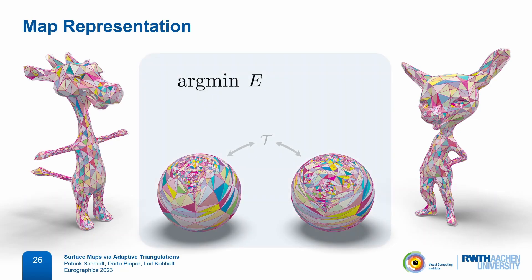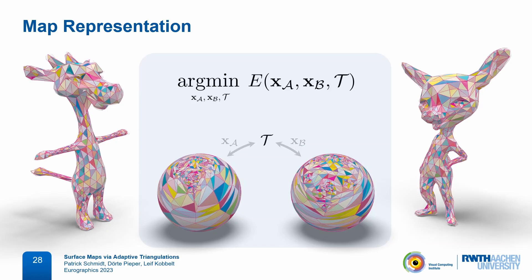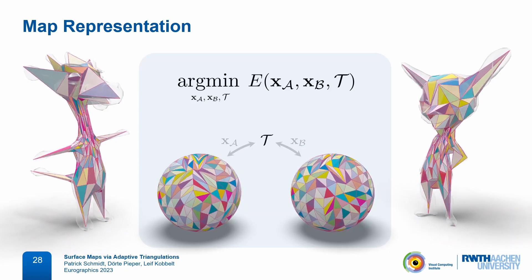We formulate this as a single energy minimization problem, exploiting two different types of degrees of freedom. First, our continuous variables are the vertex positions of mesh T on both spheres — moving vertices on the sphere causes the 3D images to follow accordingly, and we move vertices on both spheres at the same time. The second degree of freedom is the connectivity of mesh T, which we adaptively coarsen or refine based on the same objective function.